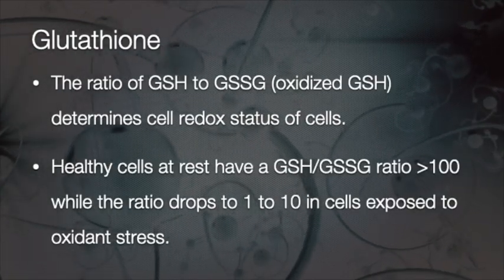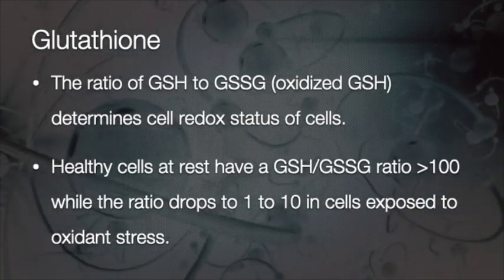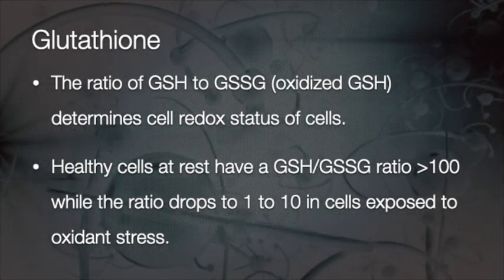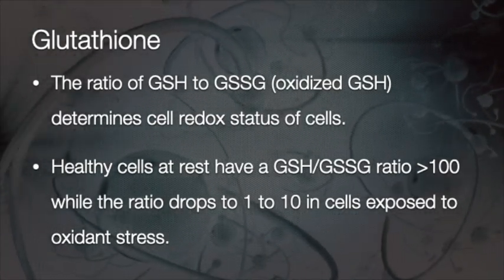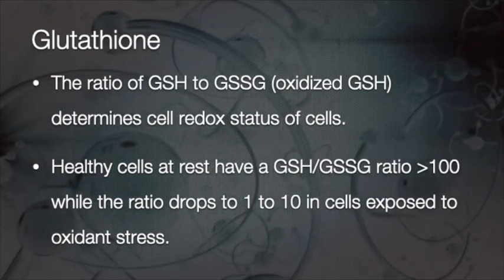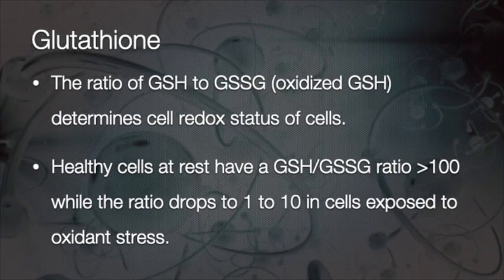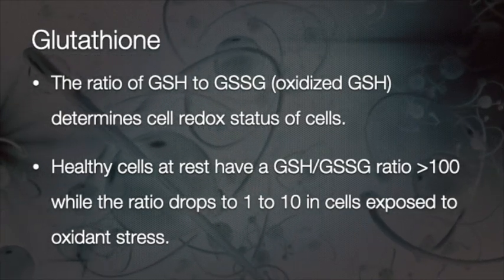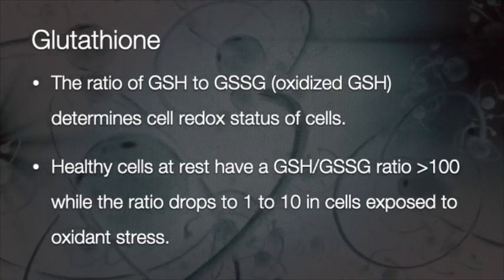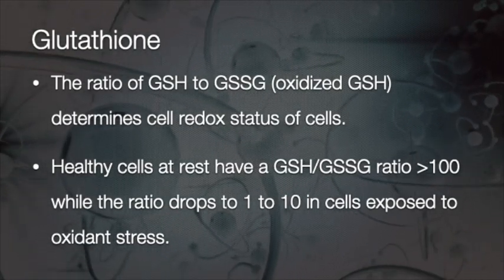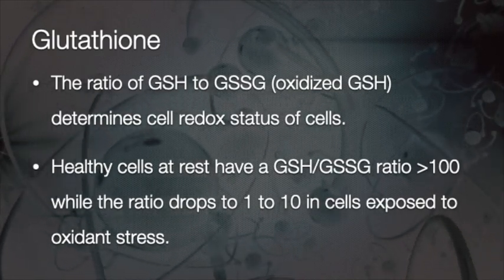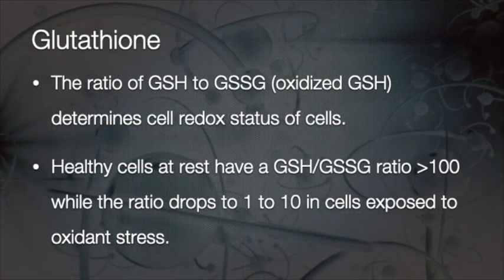The ratio of reduced glutathione to oxidized glutathione determines a cell's redox status. Healthy cells have a reduced-to-oxidized ratio of more than 100, and this drops when cells are exposed to oxidant stress. The important message is that if cells do not get back to the healthy state with this better ratio, it becomes a problem.